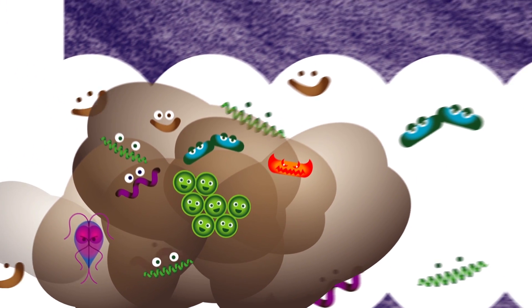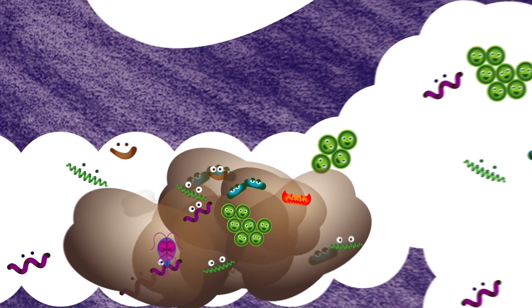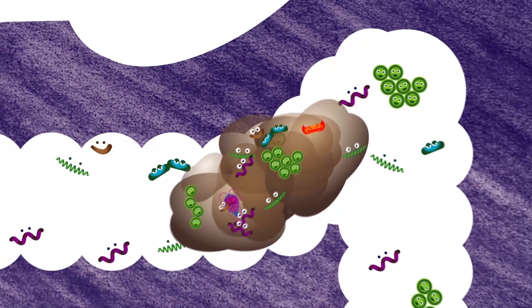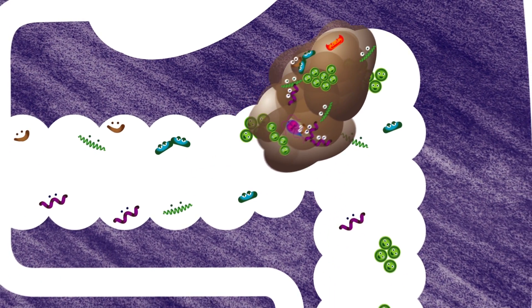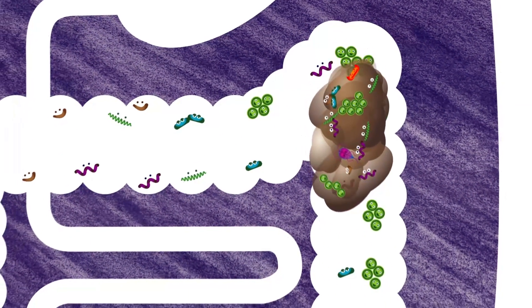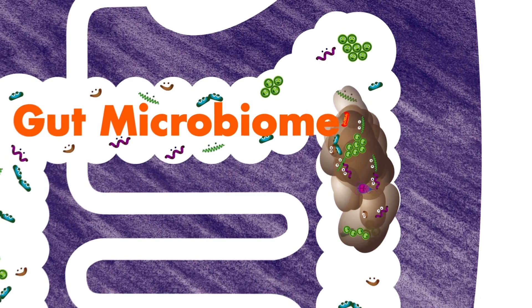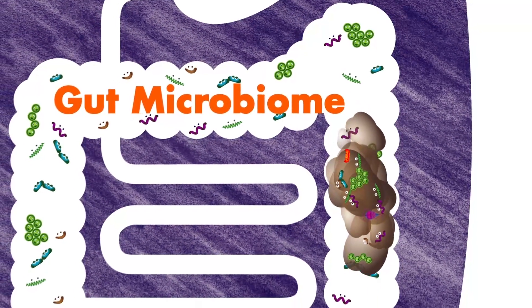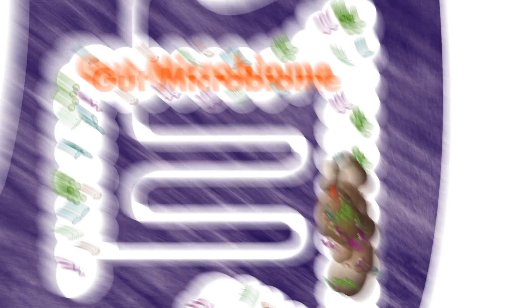Poop is a waste product formed in our intestines during digestion. Our digestive system houses its own ecosystem, home to trillions of microbes, affectionately referred to as the gut microbiome. And these microbes can get passed along in our poop.